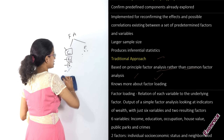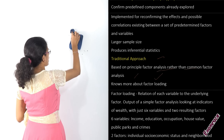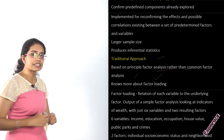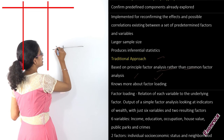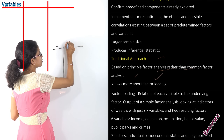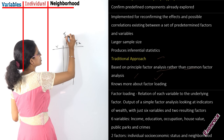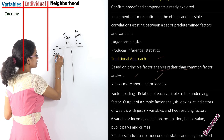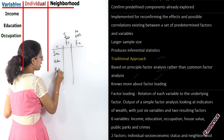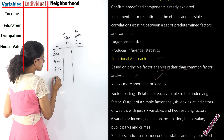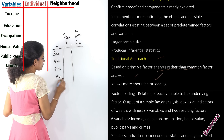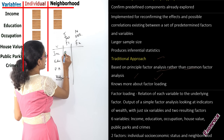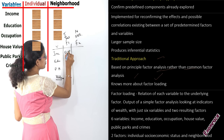Factor loading is something we have already discussed in the last class, but just a quick recap: we are trying to form a relationship between the various variables and the factors. In the last class we talked about two factors — the individual socio-economic status and the neighborhood socio-economic status. We had variables like income, education, public parks, and the violence or crime rate.